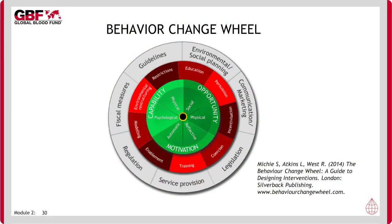A more contemporary approach is the Behavior Change Wheel. The BCW was developed from 19 frameworks of behavior change identified in a systematic literature review. It consists of three layers. The hub identifies the sources of behavior using the COM-B model — capability, opportunity, motivation, and behavior — recognizing that behavior is part of an interacting system involving all these components. Surrounding the hub is a layer of nine intervention functions to choose from based on the COM-B analysis undertaken. The outer layer, the rim of the wheel, identifies seven policy categories that can support delivery of these intervention functions.